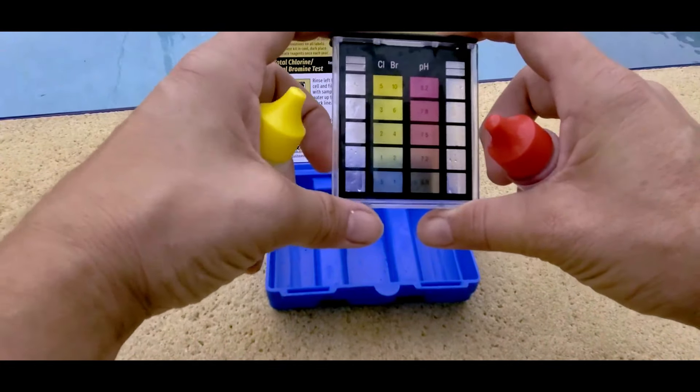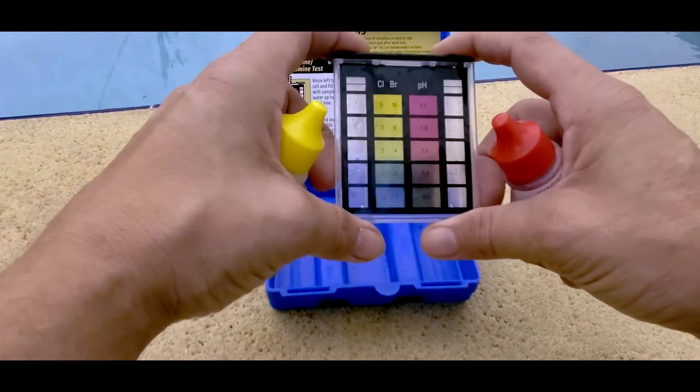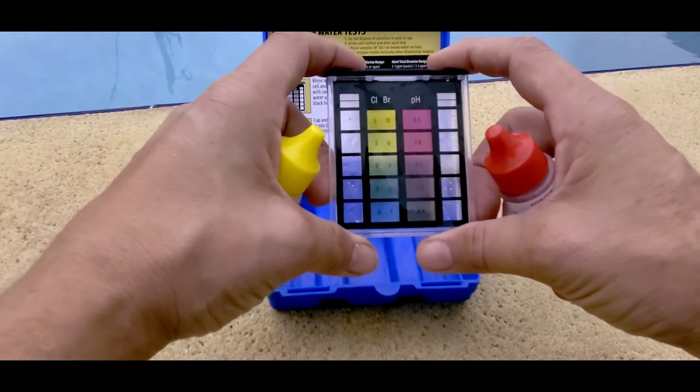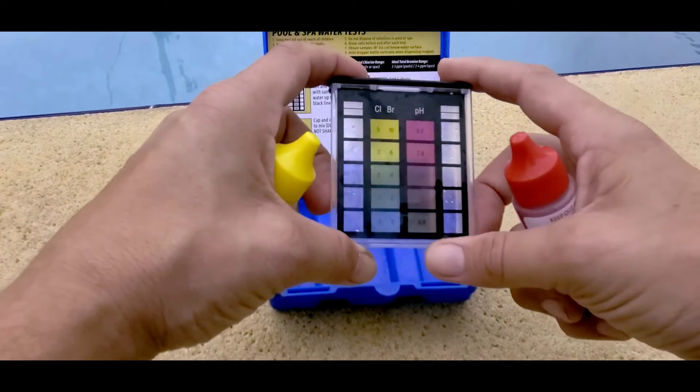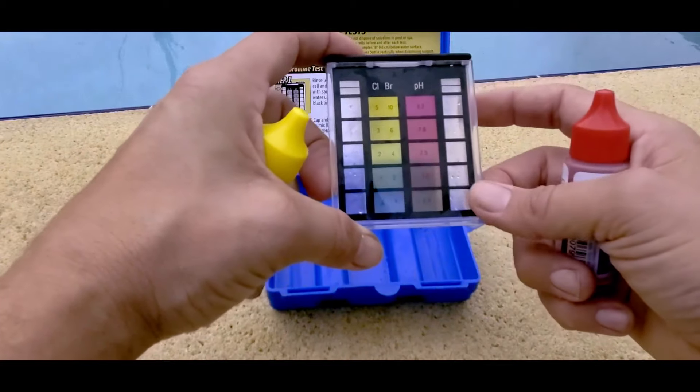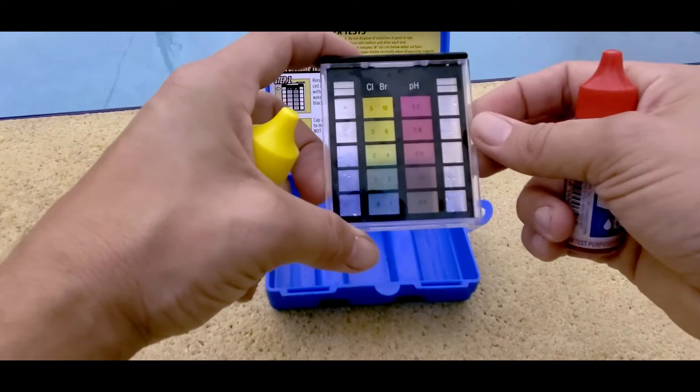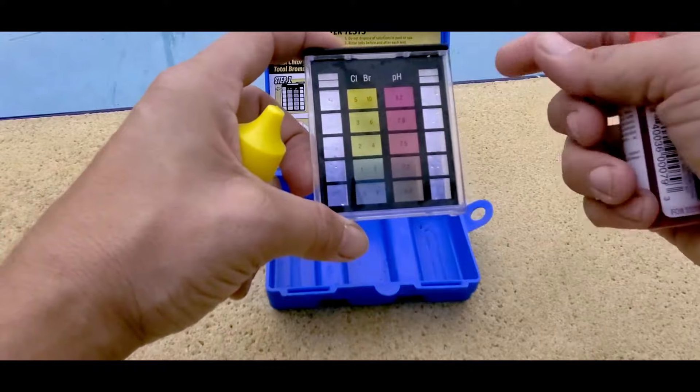Both of these numbers can vary slightly based on if you have a fiberglass pool or a plaster pool. So the type of pool matters. And you can just look up what level your pool should be at. And it's pretty easy to test with this.